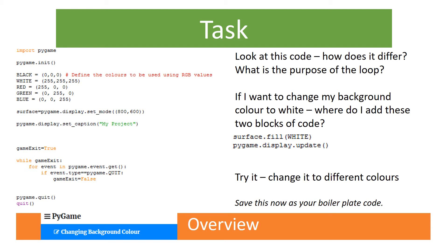Again, you've got the surface — that's the variable we've called the box that's going to be displayed on the screen. We've set a size and given our title again. Now we can start adding content to it. You can see the two lines of code: surface.fill white, and pygame.display.update — that would update our background. I want you to try adding this line of code into Trinket, update it, and see what happens. Then try changing it to a different colour and see if you can do that.